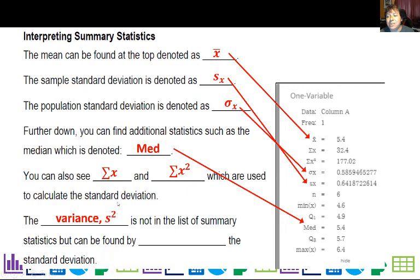Variance is s squared. So we're just going to take that s of x and square it. And that will give us a variance. So I would take this 0.64. I'd probably do about four digits at least and square that. And that would give me a very good estimation of variance.